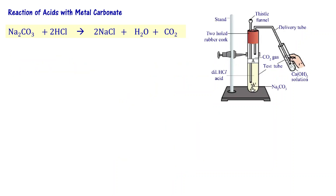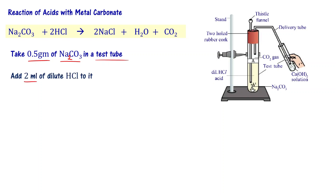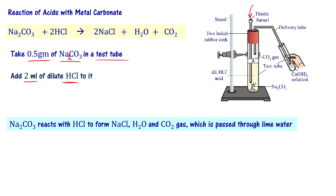To begin the experiment, take 0.5 grams of Na2CO3 in a test tube and add 2 ml of dilute HCl to it via the funnel. The reaction occurs: Na2CO3 + 2HCl → NaCl + H2O + CO2 gas. This CO2 gas passes through the delivery tube into the lime water — Ca(OH)2 solution.